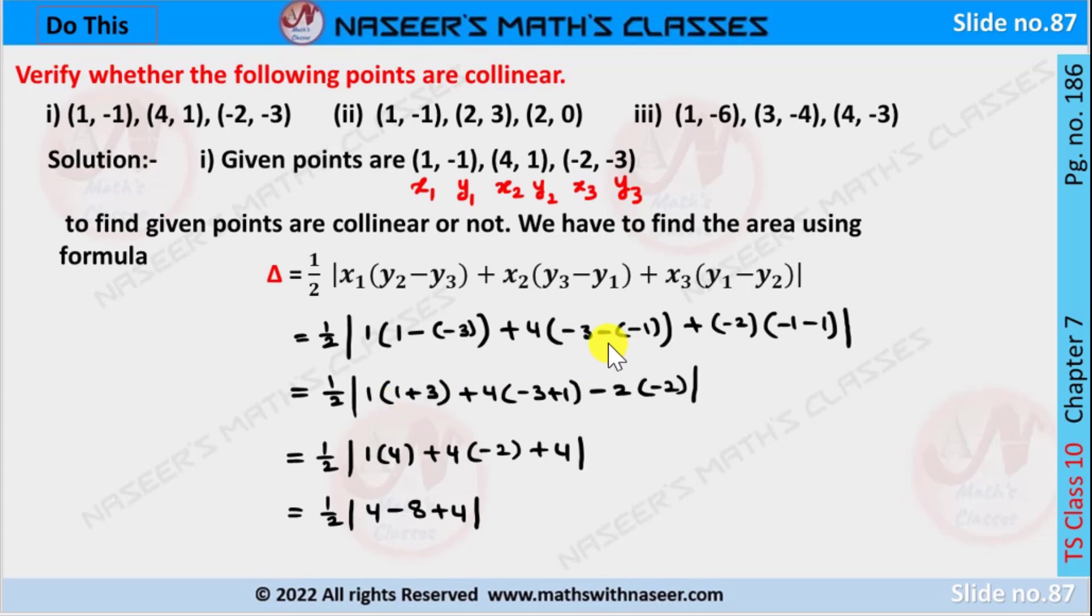Here minus times minus is plus, so it can be written as -3 + 1, which are both minus. -1 - 1 can be written as -2. After simplifying: 1 + 3 is written as 4, and -3 + 1 is written as -2, and -2 times -2 is +4.